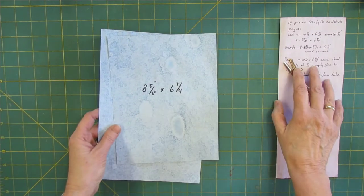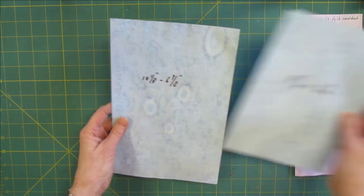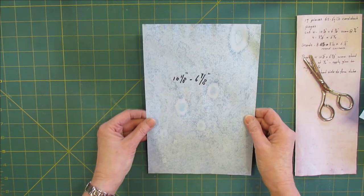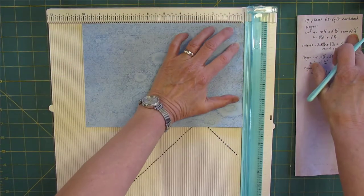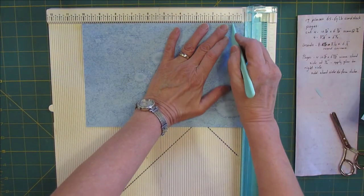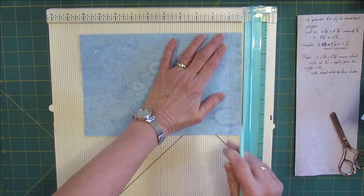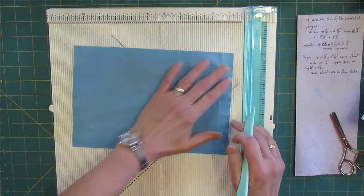We're going to concentrate on the pages first. Take the long one and your scoreboard, and score at 3/4. This is the wrong side - I should score on the wrong side, flip it over to the front and score on the front.